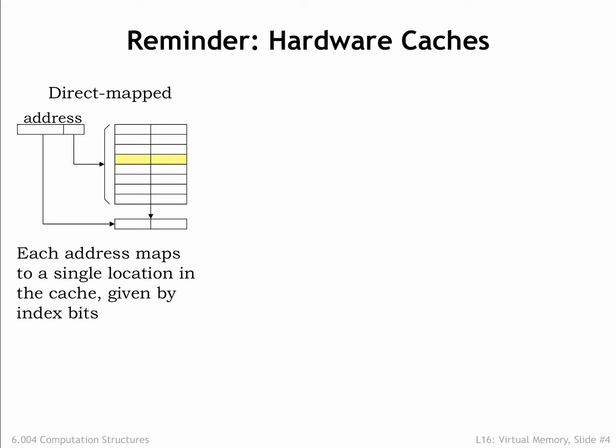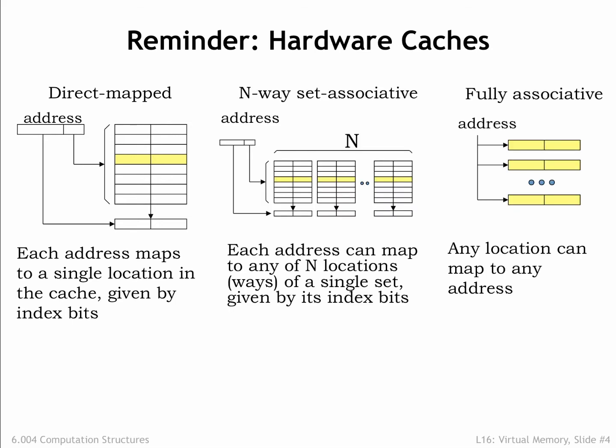Caches work well because of the principle of locality. If the CPU accesses location X at time t, it's likely to access nearby locations in the not-so-distant future. The cache is organized so that nearby locations can all reside in the cache simultaneously, using a simple indexing scheme to choose which cache location should be checked for a matching address. If the address requested by the CPU resides in the cache, access time is quite fast. In order to increase the probability that requested addresses reside in the cache, we introduced the notion of associativity, which increased the number of cache locations checked on each access, and solved the problem of having instructions and data compete for the same cache locations.